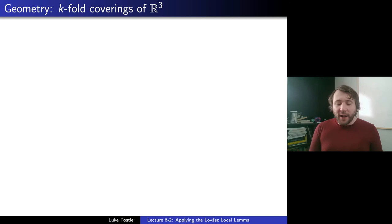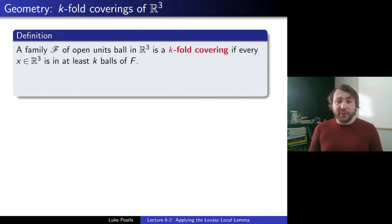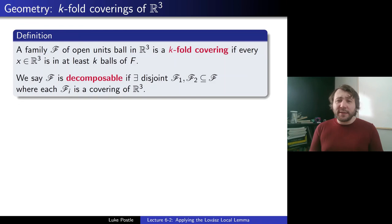Here's the key definition: a family F of open unit balls in R³ is a k-fold covering if every x in R³ is in at least k balls of F. So that's a covering where every point is in at least one ball, but now we want k-fold — we want to cover each point at least k times. Then the other key concept: we say F is decomposable if there exist disjoint F1 and F2 partitioning F, where each Fi is a covering of R³.